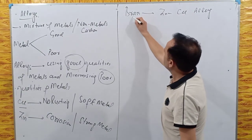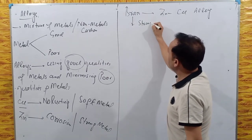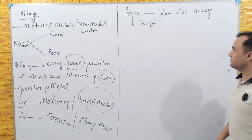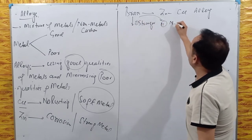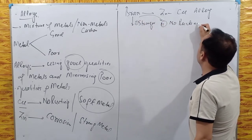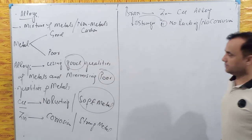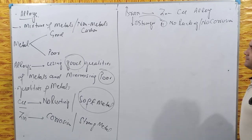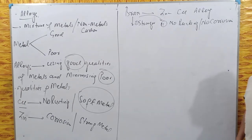Brass is better than both zinc and copper individually. It is stronger, which means the poor quality of copper (softness) has been overcome. And brass shows no rusting or corrosion, which means the poor quality of zinc has also been covered. So we can make different types of alloys, and the main principle is always to use good qualities and minimize poor qualities of the constituent metals.